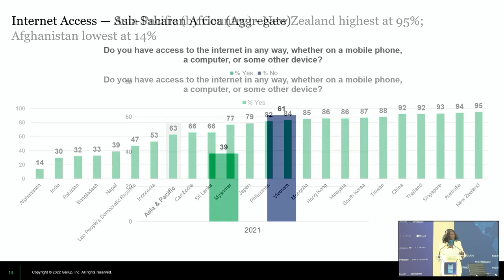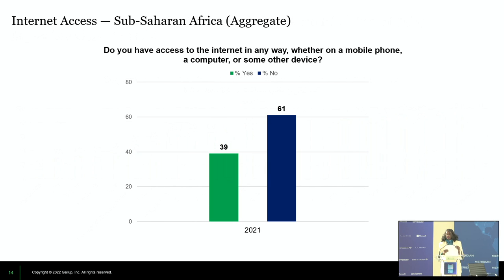Sub-Saharan Africa: 23 countries were polled. The aggregate view shows a stark disparity in connectivity and access — 61% saying no, meaning they have not had any access to the internet within the last 30 days, and only 39% saying yes.